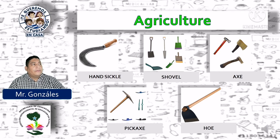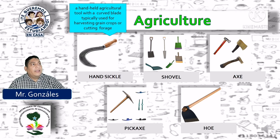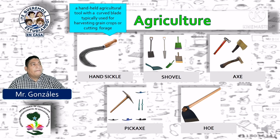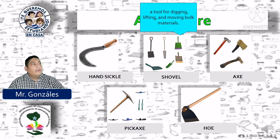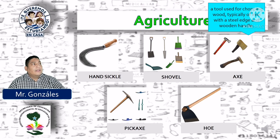Agricultural area. Sickle: a handheld agricultural tool with a curved blade typically used for harvesting grain crops and cutting forage. Una herramienta manual de agricultura con una navaja curva tradicionalmente utilizada para la cosecha de cultivos de granos y cortar forraje. Shovel: a tool for digging, lifting or moving bulk materials. Una herramienta para cavar, levantar o mover materiales amontonados. Axe: a tool used for chopping wood, typically of iron with a steel edge and wooden handle. Una herramienta utilizada para cortar madera, tradicionalmente de hierro con un filo de acero y un mango de madera.